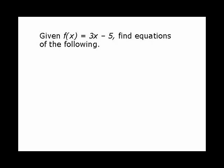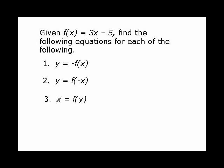We're given the function f(x) = 3x - 5 and we want to find equations of the following. First, y = -f(x), which is a reflection in the x-axis. Then y = f(-x), which is a reflection in the y-axis. And then x = f(y), which is a reflection in the line y = x, also known as an inverse.